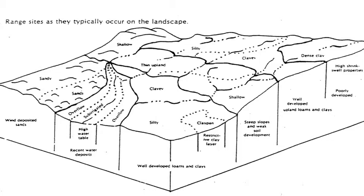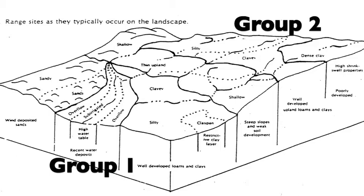On this diagram is a topographic layout of different range sites. For training purposes we divide those into three different groups. Group one range sites, located in the lower left portion of this diagram, are those places that receive additional moisture — if water collects at the bottom of a hill, you'd be in a group one range site, which includes sub-irrigated and overflow sites. Group two sites have soils at least 20 inches deep and do not receive any additional moisture, located on the top of the hill. Group three sites have soils less than 20 inches deep, usually on hill slopes with high rock outcropping — typically shallow or very shallow sites.